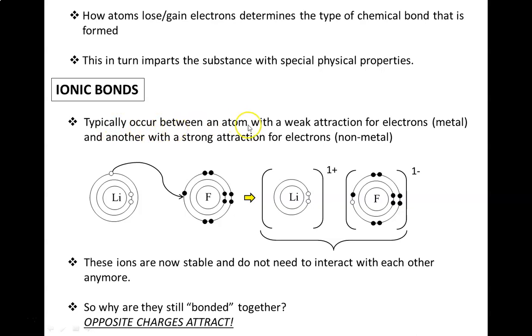They typically occur between atoms with a weak attraction for electrons, those are usually metals, and another with a strong attraction for electrons, which are usually non-metals.